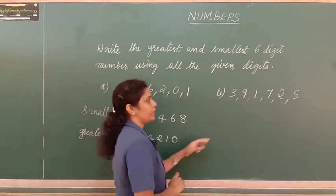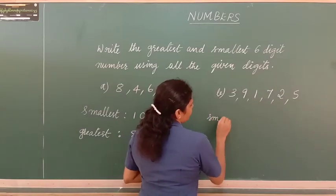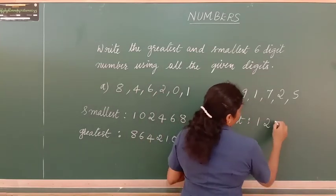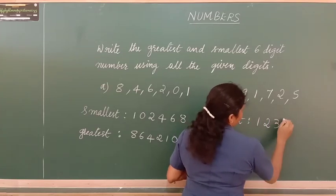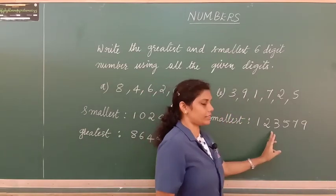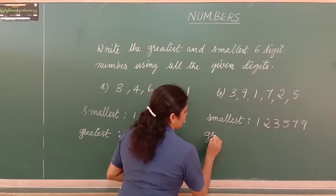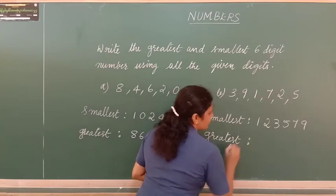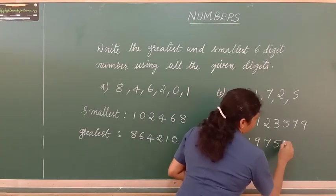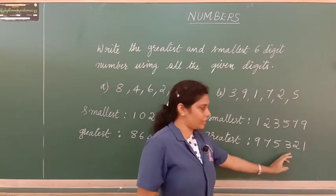In the second problem there is no 0, so we can start directly. Ascending order gives the smallest: 1, 2, 3, 5, 7, 9 — that is 1,23,579. For the greatest, descending order: 9, 7, 5, 3, 2, 1 — giving 9,75,321.